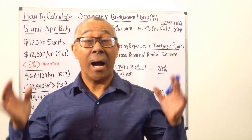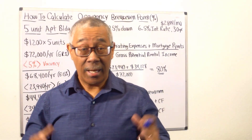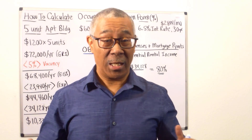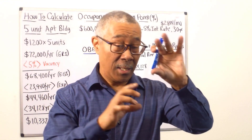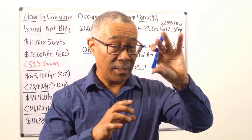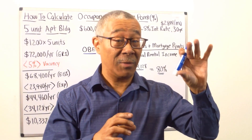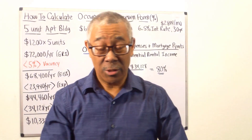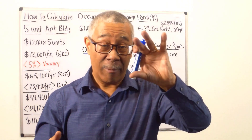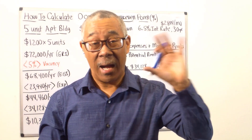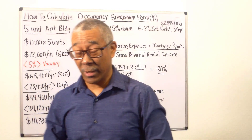How to calculate the occupancy break-even point. The occupancy break-even point is the point at which your occupancy level equates to you breaking even in terms of cash flow. It's your cash flow break-even point — at what level of occupancy do you have to achieve. That's pretty much what it is.